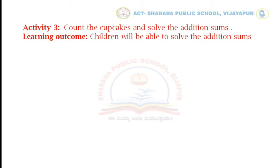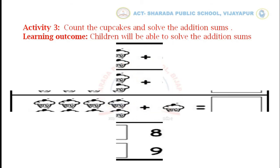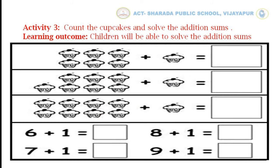Now we will do activity number 3: count the cupcakes and solve the addition sums. Through this activity you will be able to solve the addition sums. Now we will count the cupcakes in the first row: 1, 2, 3, 4, 5, 6 plus 1 cupcake is equal to 7. There are 7 cupcakes in the first row. We have to draw 7 cupcakes in the blank box. At the bottom we can see the addition fact: 6 plus 1 is equal to 7. Write number 7 in the blank box. In the same way, count and solve the remaining addition sums to complete this activity.